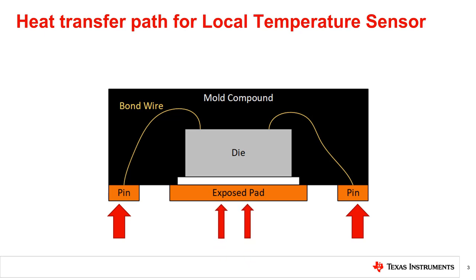The DAP, if present, provides the next most dynamic thermal path between the PCB and the die because of the thermal epoxy between the DAP and die. Lastly, the mold compound provides an additional thermal path, but due to its low thermal conductivity, any heat transfer through the mold compound itself is lower than heat transfer through the leads or DAP.